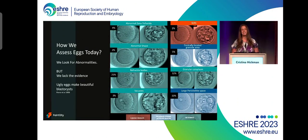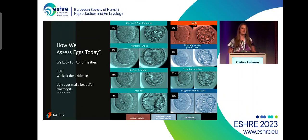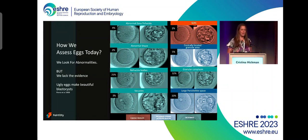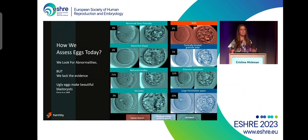So, how do we assess eggs today? The gut instinct that we have as embryologists is to try and see what anomalies we can visually interpret in the eggs. We already have lots of publications on this, mostly from Thomas Ebner, Laura Rienzi, amongst others. And they have listed abnormal zona pellucida, abnormal shape, refractile bodies, vacuoles, granular cytoplasm, CERCs — all of these are characteristics that we can see.